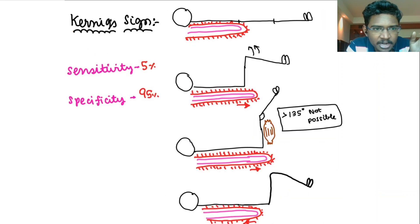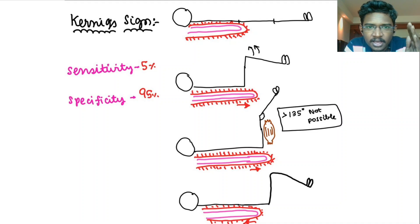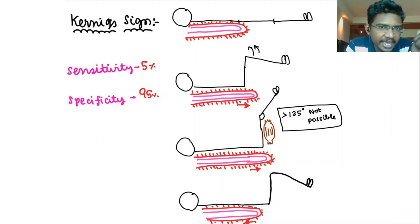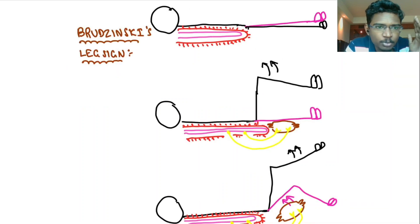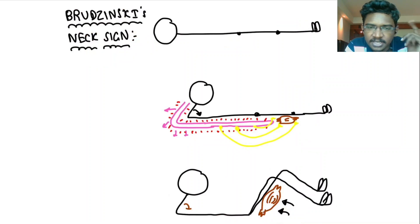You can remember: Kernig sign starts with K — extension of the Knee not possible, K. These are Brudzinski's Leg sign as well as Neck sign.